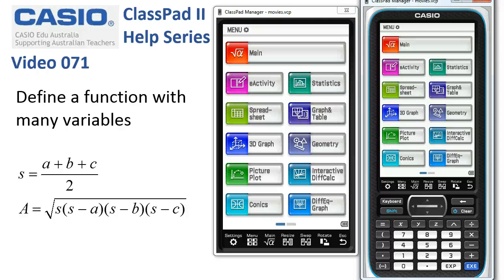Defining a function with many variables. Now here's Heron's formula to calculate the area of a triangle given three sides, and it's an ideal candidate for what we're about to do.